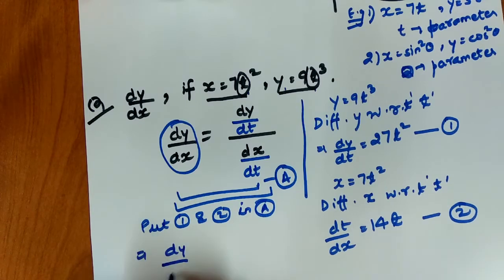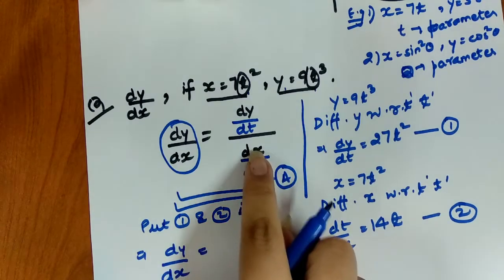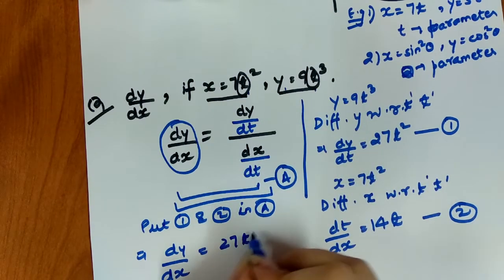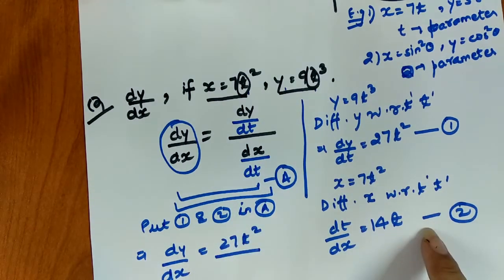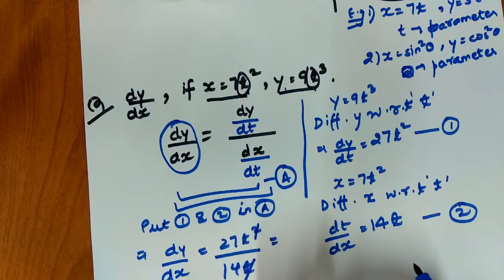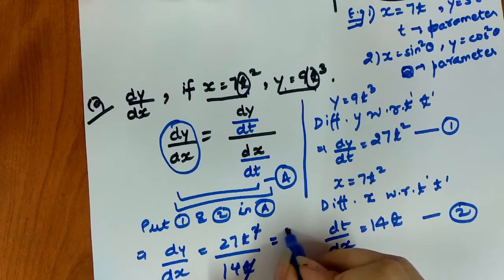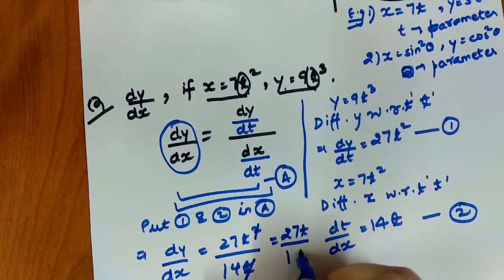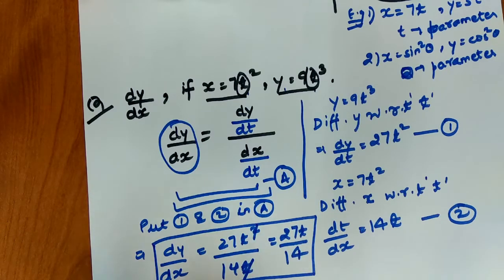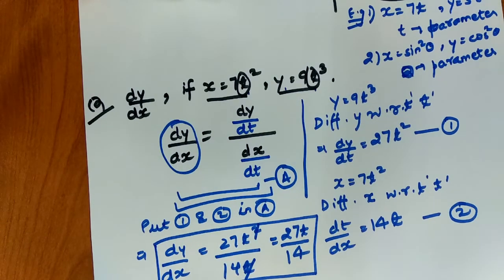So dy/dx = (dy/dt) ÷ (dx/dt). Here dy/dt is 27t² and dx/dt is 14t. The t cancels, so dy/dx = 27t/14. Look how easy it is — nothing changes. We just need to differentiate the parametric form with respect to the parameter variable rather than directly with respect to x.